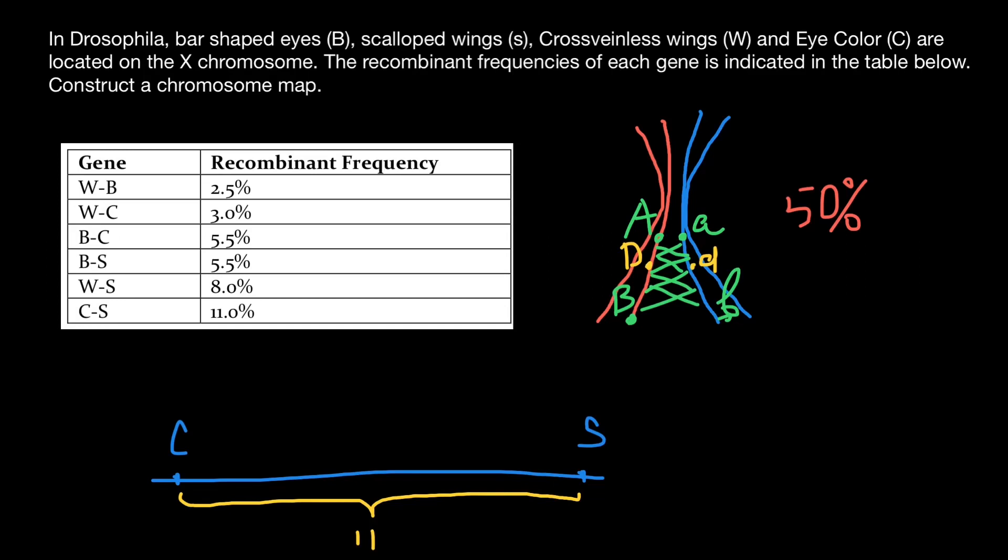Now let's take a look and find the second pair of genes with the highest frequency of the crossing over between them. And this is genes W and S. So we can position this W gene, say, somewhere here. Or we can position it somewhere here. So two possible variants, which one to choose.